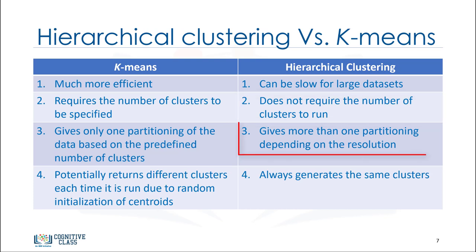Hierarchical clustering gives more than one partitioning depending on the resolution, whereas k-means gives only one partitioning of the data. Hierarchical clustering always generates the same clusters, in contrast with k-means that returns different clusters each time it is run due to random initialization of centroids.